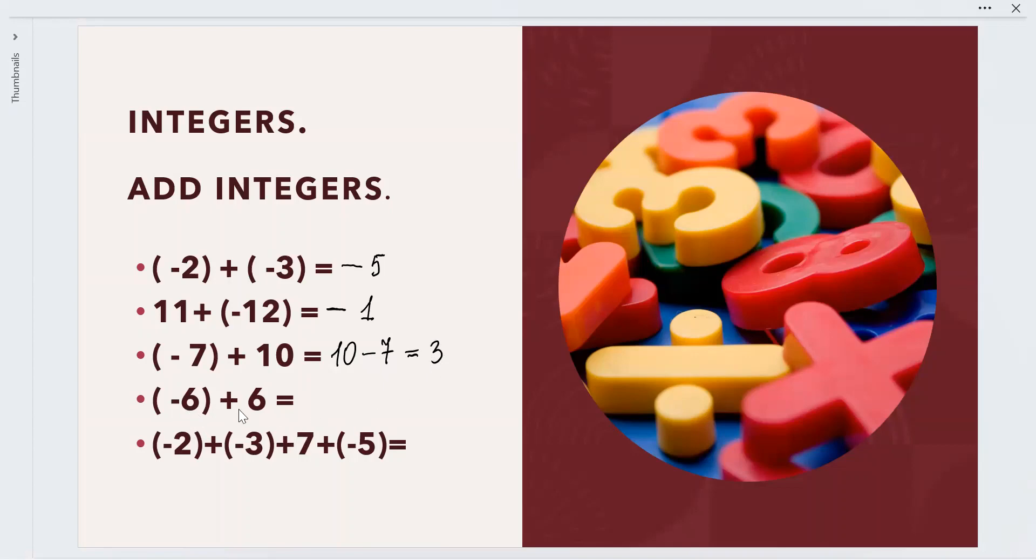And -6 plus 6: we have to add opposite numbers. The sum of opposite numbers is equal to 0.